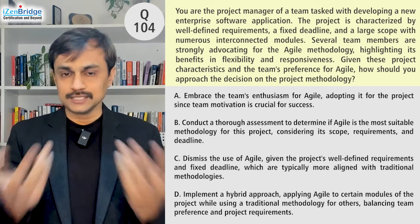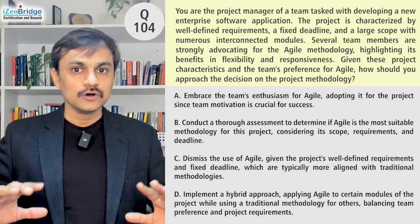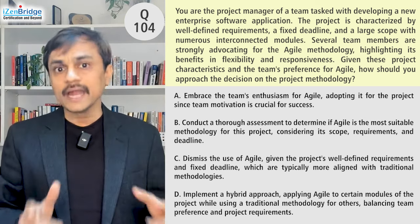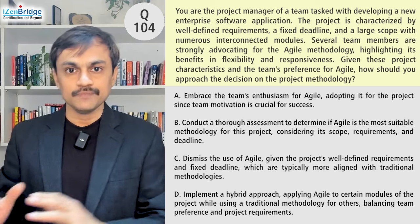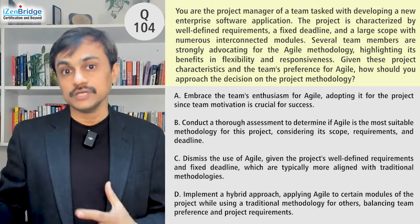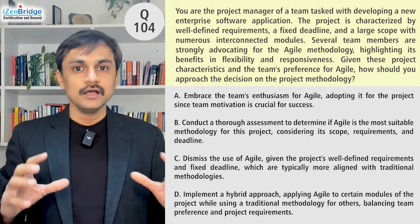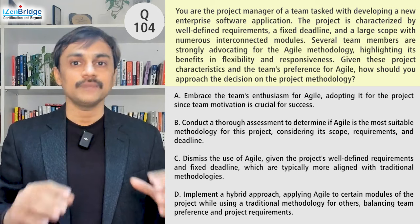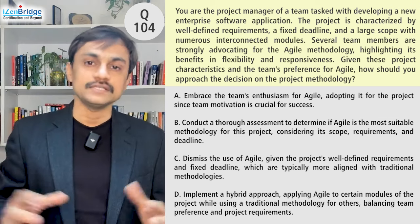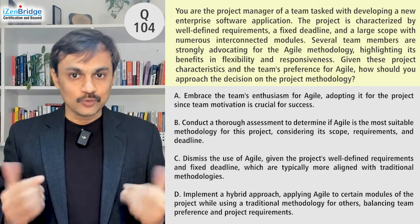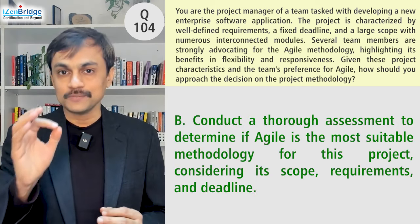Why do I still recommend B? In PMI-style thinking, when you get a suggestion, you need to make sure you look at it, provide sufficient data and conversation, and then move to the decision. Option D is directly stating the decision. It could be the decision after analysis, and I personally believe that might happen — but Option B says: talk to your team, figure out various parameters, put proper analysis in place, address the Agile recommendation, and then decide which lifecycle is suitable. It's a close choice, but go with Option B.